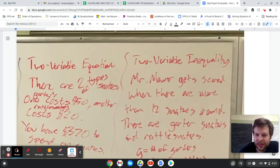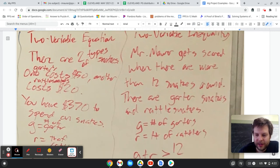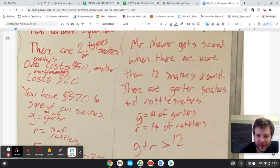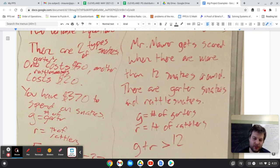And then the last one - I think I was really running out of steam with my creativity here - just saying that Mr. Maurer gets scared when there are more than 12 snakes around. And so garter snakes and rattlesnakes are the two types of snakes in this word problem. So G plus R is greater than 12.